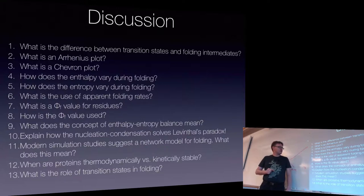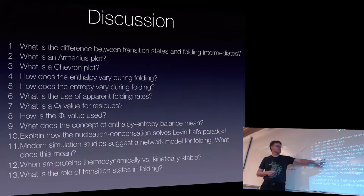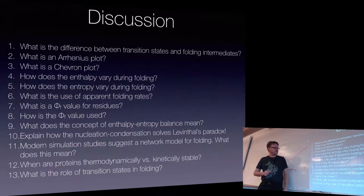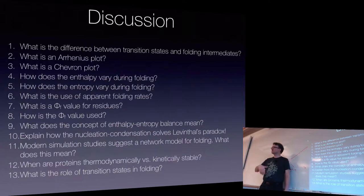If you ever want to change the speed with which a protein folds or influence a process, these nucleating residues are the ones you want to go after. If a residue has a high phi value, it's important for the folding rate. If it has a phi value near zero, it's not going to be important for the rate of folding of that protein.